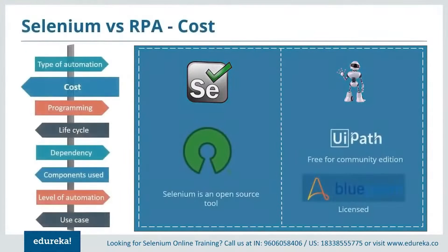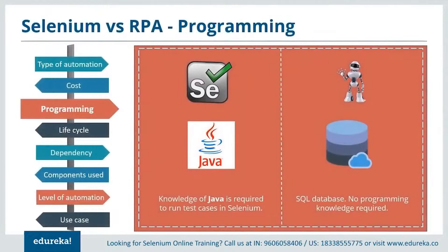Regarding cost — Selenium is an open-source tool. RPA has a set of tools: UiPath, Automation Anywhere, and Blue Prism. UiPath is free for the community edition with licensed advanced versions; Automation Anywhere gives a free trial for one month with licensed advanced versions; Blue Prism is completely licensed. On programming knowledge — Selenium requires knowledge of Java to run test cases, whereas RPA does not require any coding knowledge as it deals with back-end processes and database operations.